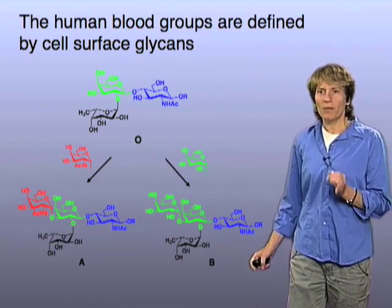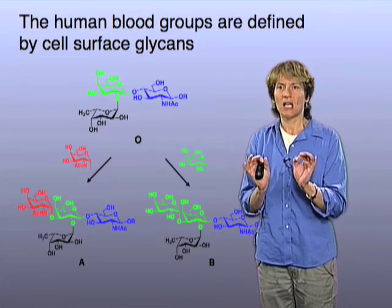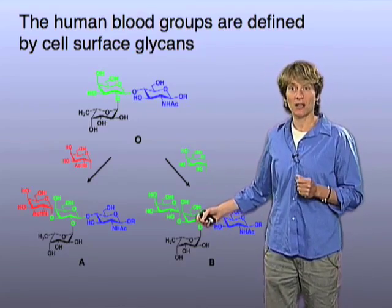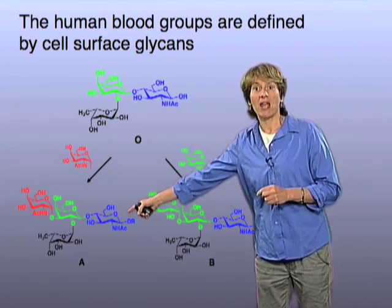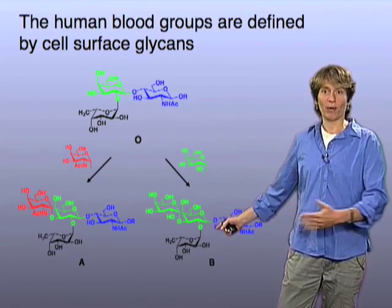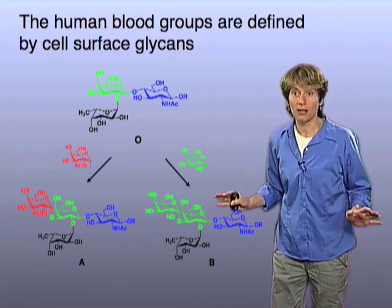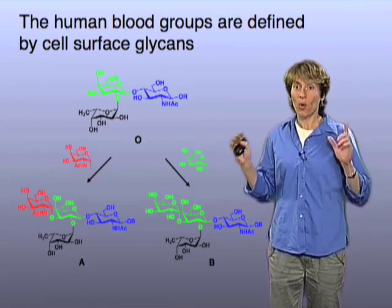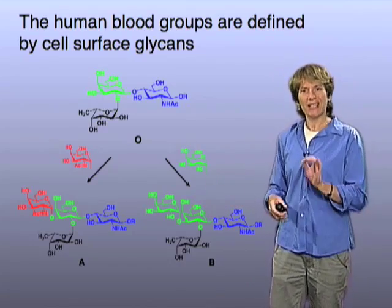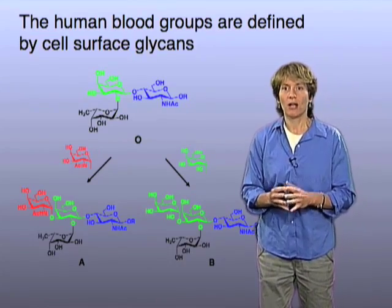And yet the human immune system is so exquisitely sensitive to structural differences that it can detect the difference between these two instantly. That's why, if you have blood type A and by accident you receive a blood donation from a blood type B donor, your immune system will react against this and reject the blood — and that's a disaster. Understanding the structures of the human blood types and what that means to the immune system was absolutely critical for blood transfusions to occur.